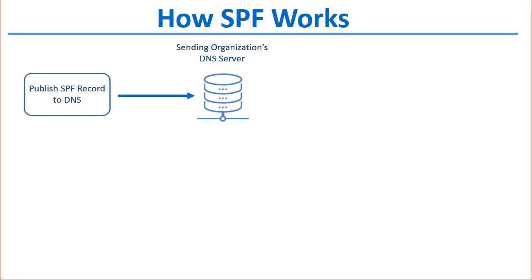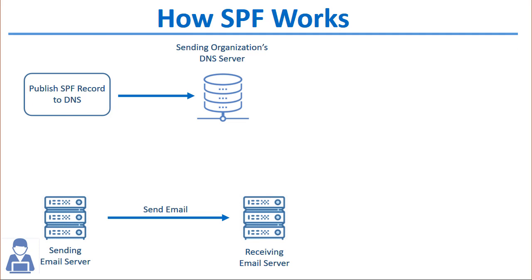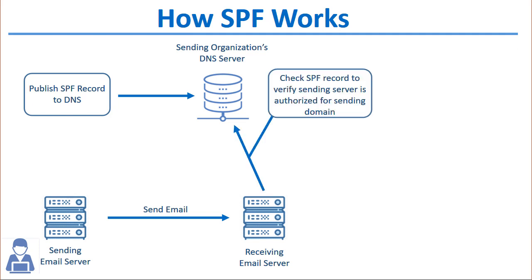Here's how SPF works. The sending organization publishes an SPF record to DNS indicating what servers are allowed to send mail for the company's domain — for example, the mail server, any gateways, or other devices sending on behalf of your domain. When an email is sent from your domain, the receiving server checks for an SPF record to verify that the server detected in the inbound connection is authorized to send email on behalf of the sending domain.